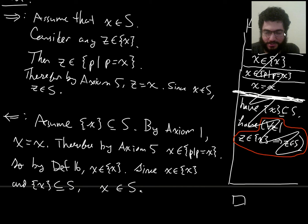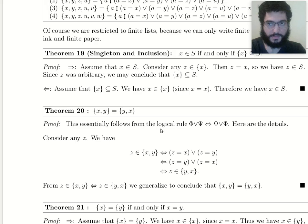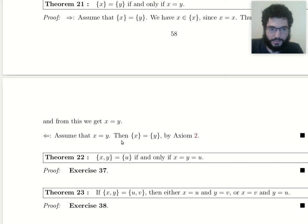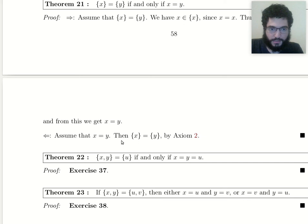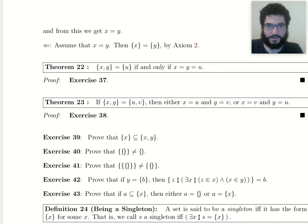We just finished Theorem 19. I'll have you read through and study the proofs of Theorems 20 and 21 on your own, and I'll give you Theorem 22 for homework. A doubleton can sometimes equal a singleton — a set that looks like it consists of two elements can sometimes in fact only have one element — and that happens precisely when the two things you listed are actually equal. Try your best, and if you're very stuck, we can do this one in the next lecture.